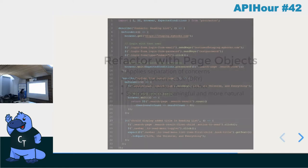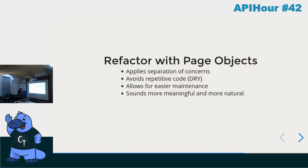My suggestion is to refactor with page objects. It's a good pattern because it applies separation of concerns, avoids repetitive code — especially if you're testing multiple login scenarios, you don't want to repeat that code. You put it in a class. It allows for easier maintenance: if your CSS selectors change, you only need to change them in one place. And finally, it reads more naturally and meaningfully, making your spec files actually look like real spec files.